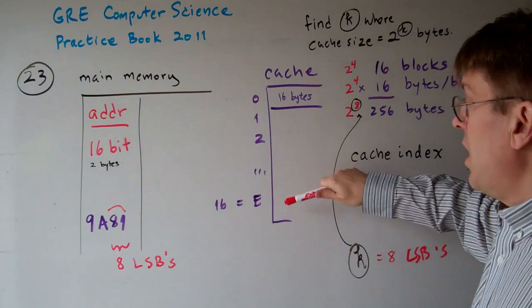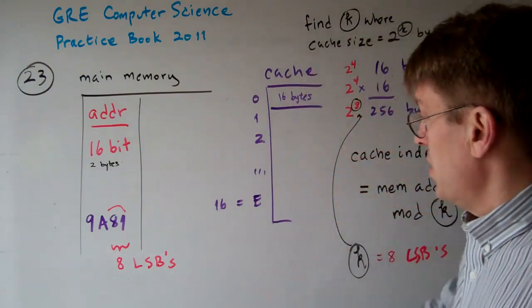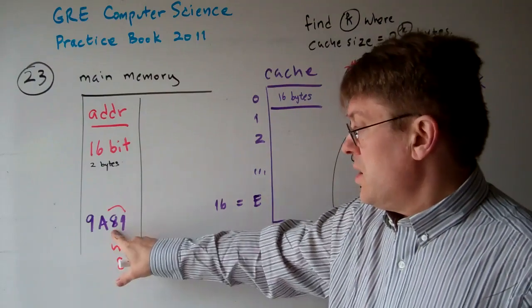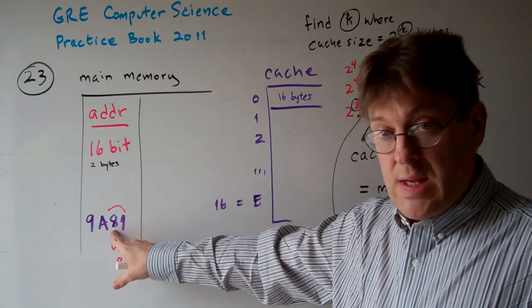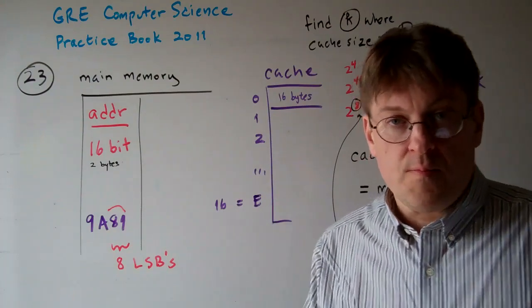So there's only 16 blocks in the cache, so it's going to go to number 8. So the answer to this one is C, 8. That's 8 base 16, of course, but 8. Thank you.